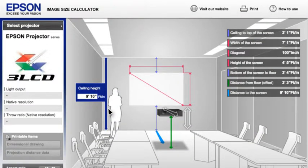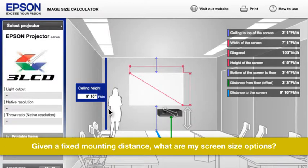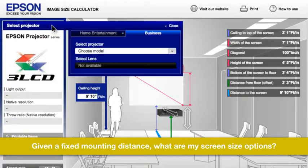Now let's do a second example. Let's say a customer has an installation rig that is 25 feet away from the screen, and that is where the projector must be mounted. He wants to know what the options are for image size.